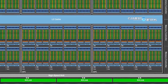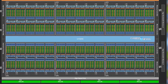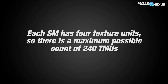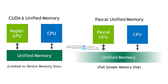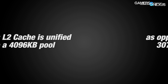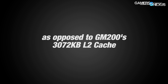One warp is scheduled per partition, as shown in the block diagrams. Each SM has four texture units, for a maximum possible count of 240 TMUs. L1 and texture cache are split for shared use. Unified memory most immediately benefits programmers by eliminating the need for explicit memory copy calls between CPU and GPU memory pools. With regard to Pascal specifically, L2 cache is unified into a single 4096-kilobyte pool, versus GM200's 3072-kilobyte L2 cache, further reducing reliance upon DRAM, which is huge for speed increases.